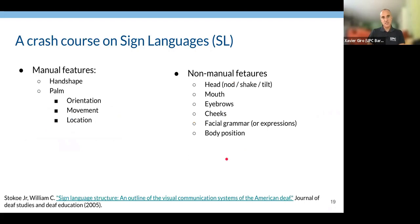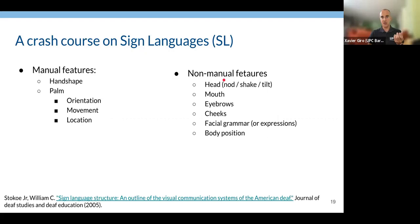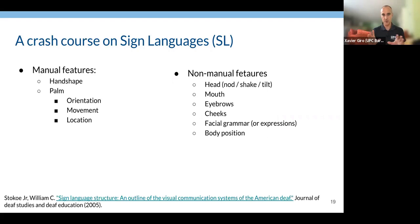Sign language is not only hand-based. Hands are the most important part — the hand shape, orientation, movement, and location all matter — but there are also non-manual features: head nodding or shaking, touching the mouth, eyebrows, cheeks, facial expression, and body position. Everything is important for full understanding of sign language. Solving sign language translation requires estimating all these manual and non-manual features.